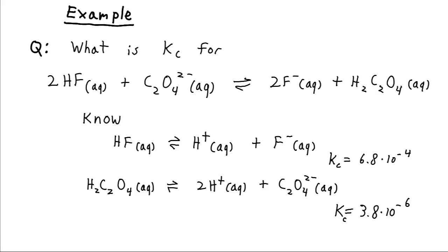Now when we do that, we find that the equilibrium constant for hydrofluoric acid decomposing into its ions is 6.8 times 10 to the minus 4, and for oxalic acid decomposing into its ions is 3.8 times 10 to the minus 6. And we can combine that information in order to find the information that we're after for this equation.